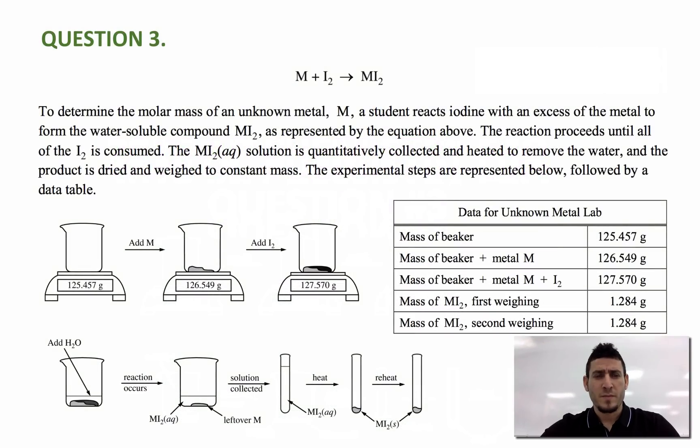The question says, to determine the molar mass of an unknown metal M, a student reacts iodine with an excess of the metal to form the water-soluble compound MI2, as represented by the equation above. The reaction proceeds until all of the iodine is consumed. The MI2 aqueous solution is quantitatively collected and heated to remove the water, and the product is dried and weighed to constant mass. The experimental steps are represented below, followed by a data table.